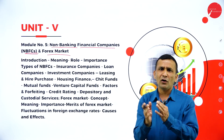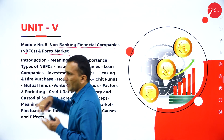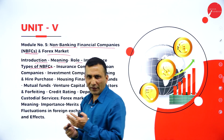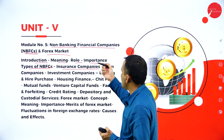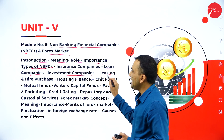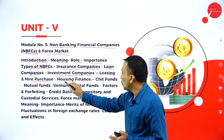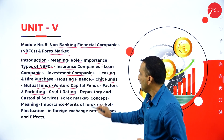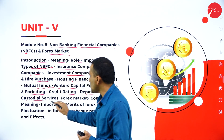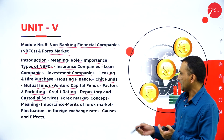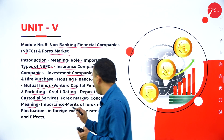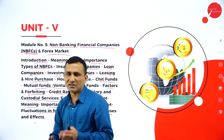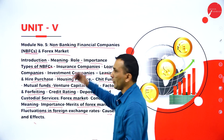Unit 5 covers Non-Banking Financial Companies (NBFCs) and the Forex Market (foreign exchange market). Topics include: introduction, meaning, role, and importance of NBFCs, and the different types — insurance companies, loan companies, investment companies, leasing and hire purchase companies, housing finance, chit funds, mutual funds, venture capital, factoring, forfeiting, credit rating, deposit taking, and custodial services. For the forex market: meaning, importance, merits, fluctuation of foreign exchange rates, and their causes and effects.